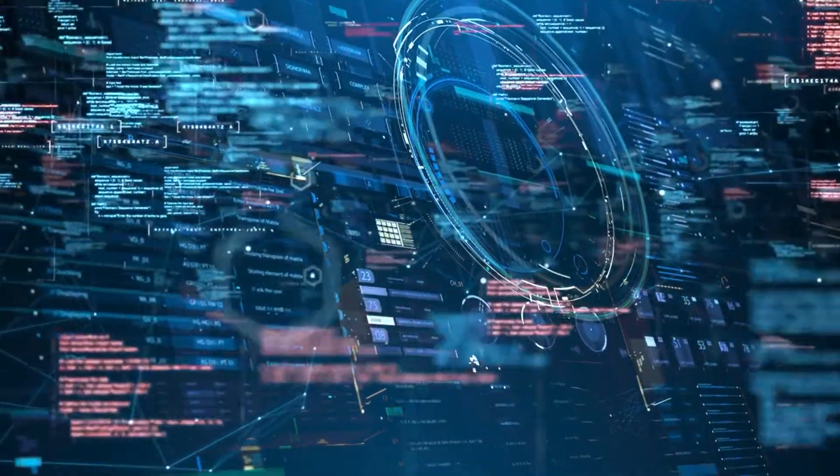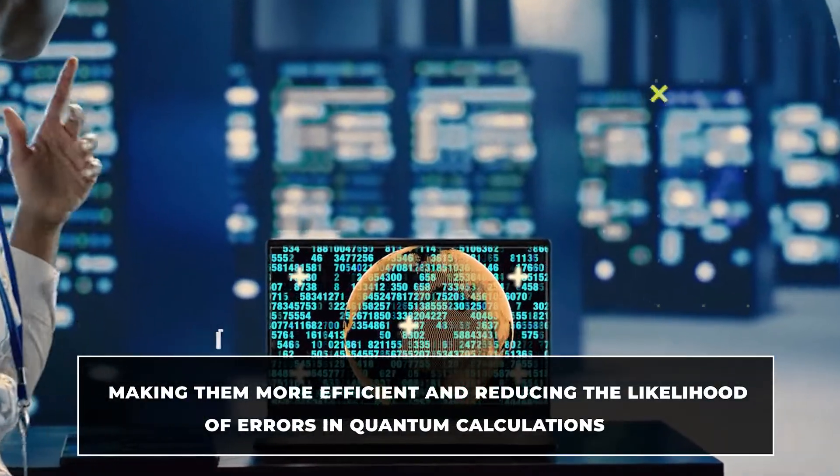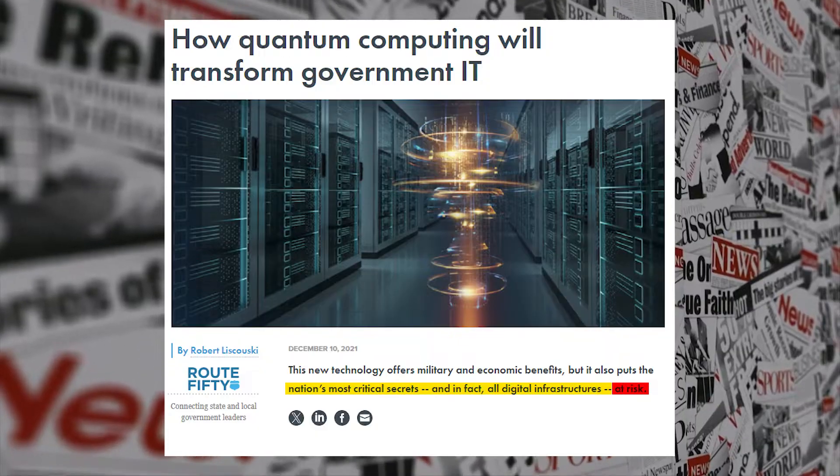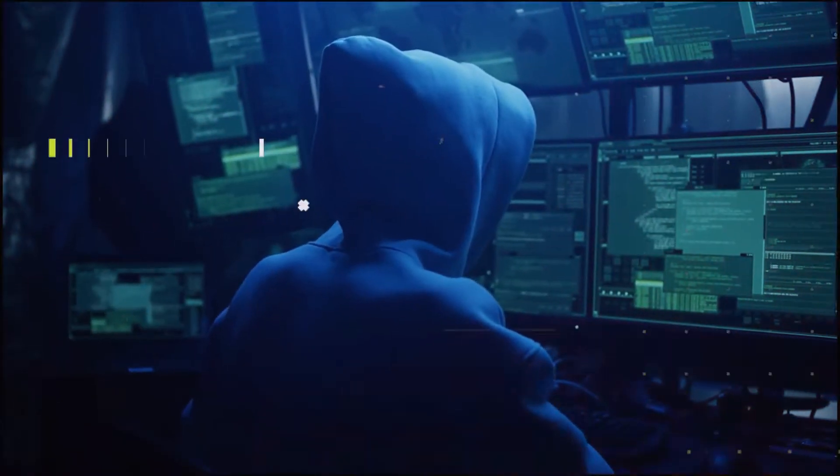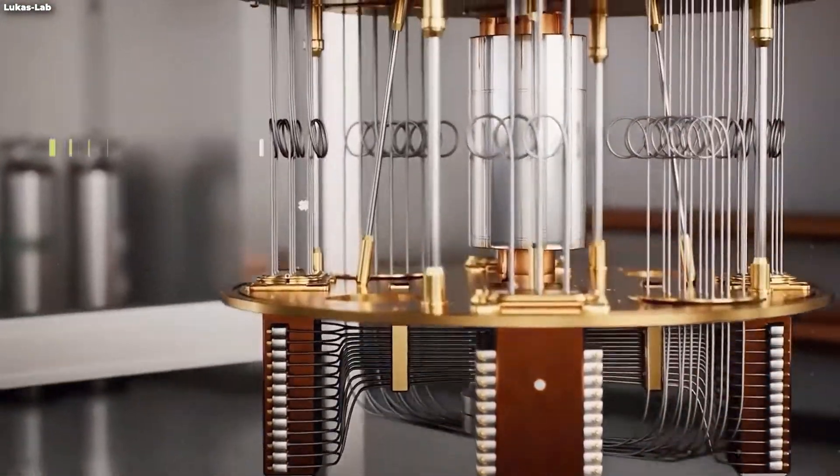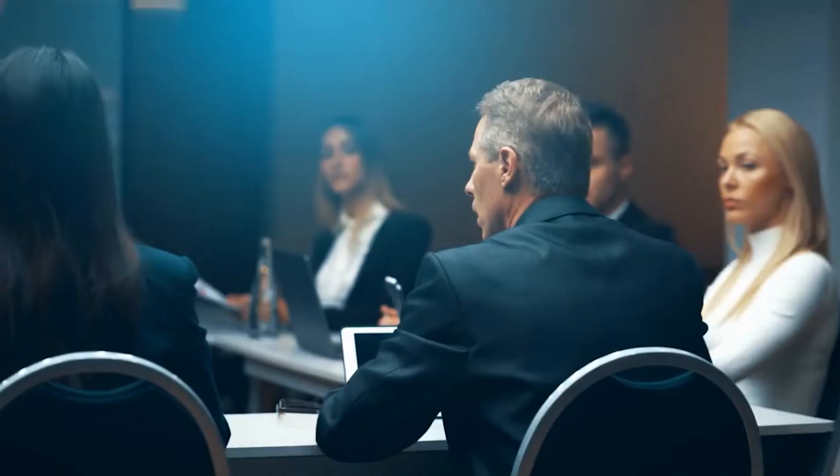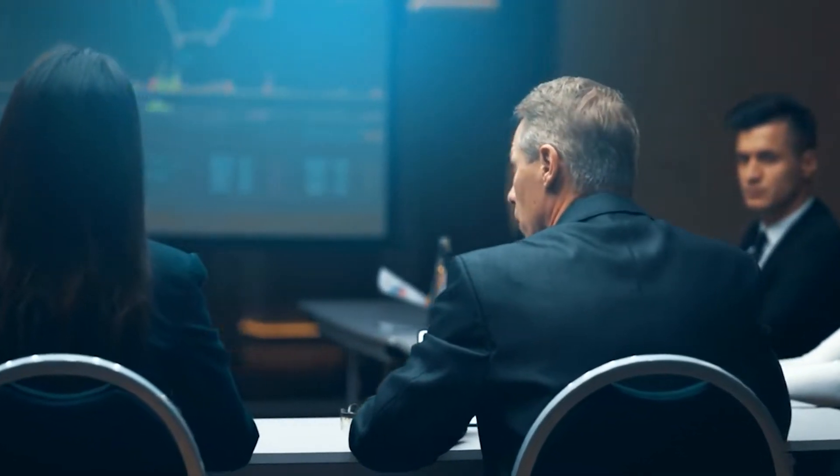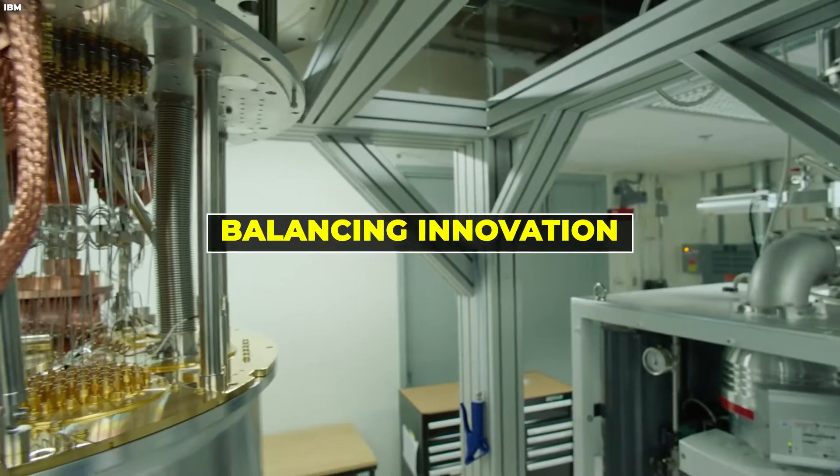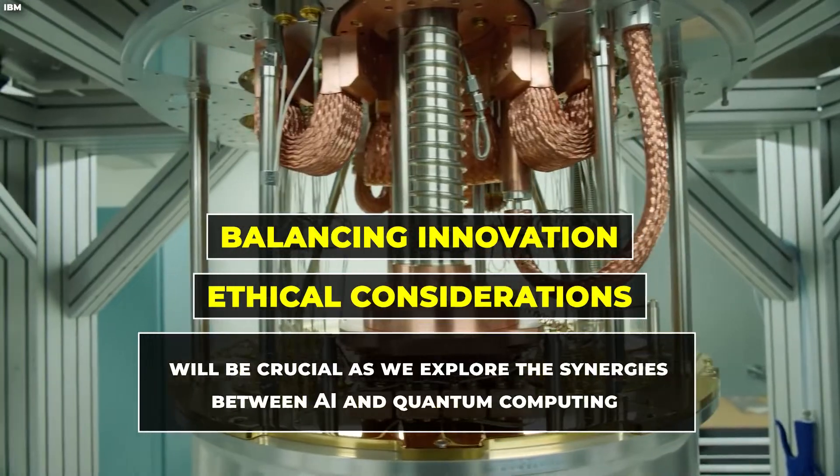This integration also raises concerns about government control and the potential for misuse. The power of quantum computing could be used to break encryption, posing risks to data security and privacy. Additionally, the combination of AI and quantum computing could lead to autonomous systems with capabilities beyond our control. There is a growing call for regulations and ethical guidelines to ensure that the integration of these technologies is managed responsibly and for the benefit of society. Balancing innovation with ethical considerations will be crucial as we explore the synergies between AI and quantum computing.